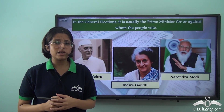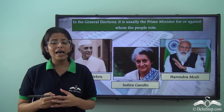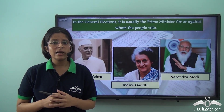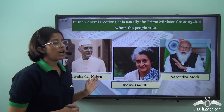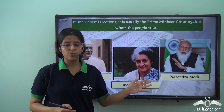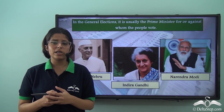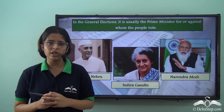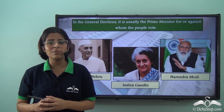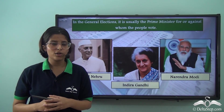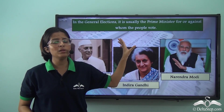The face of the Prime Minister is considered synonymous with the representative of the country — we recognise the country as being under the leadership of the Prime Minister. India has had several charismatic leaders who became Prime Minister, such as Jawaharlal Nehru, Indira Gandhi or Narendra Modi. These people have an aura or charisma which makes the people of the country look up to them as the true representative of the country. In general elections, it is generally the face of the Prime Minister for or against whom the people vote.